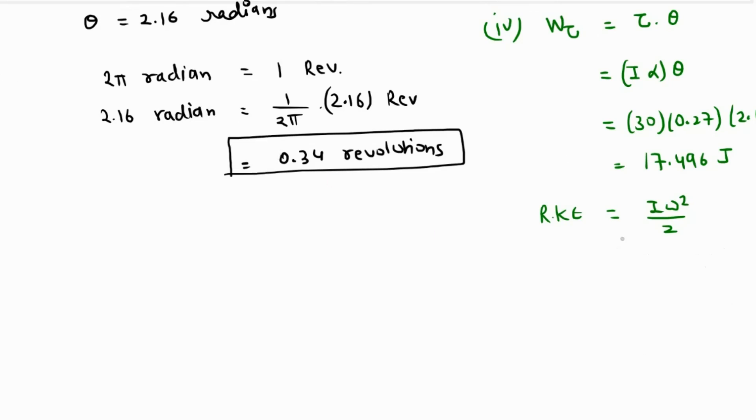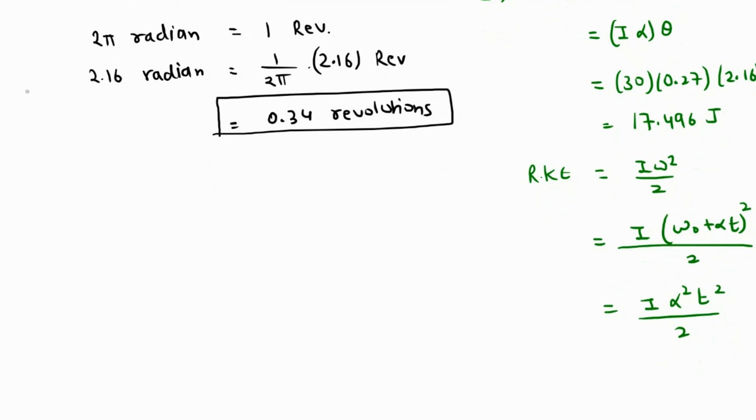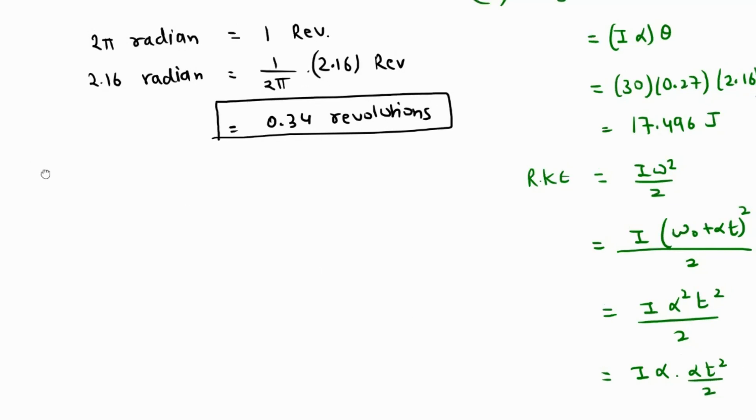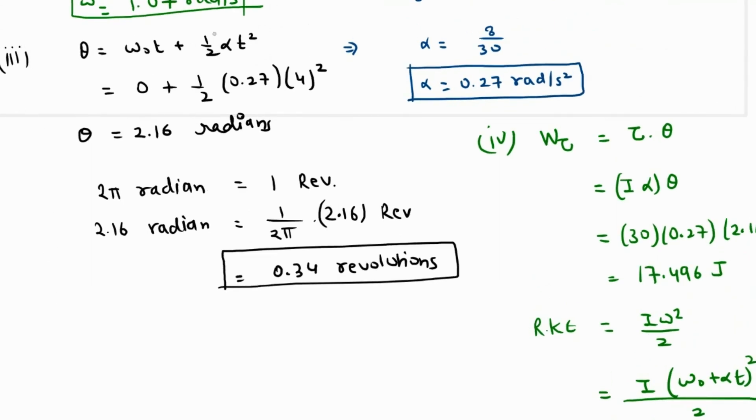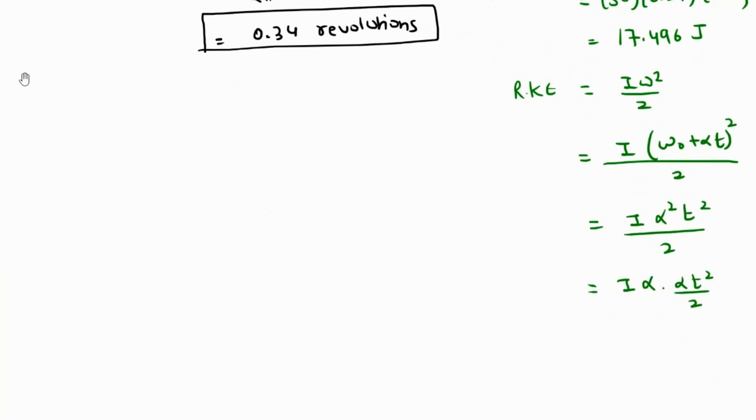How can we do that? We know that ω is α times t, because ω was ω₀ + αt, and ω₀ was 0. So that was basically α²t² over 2, right? This can also be written as Iα times ½αt². And what is ½αt²? Notice carefully - let's come over here - ½αt², since ω₀ was 0, was nothing but θ. So I can replace it by θ.